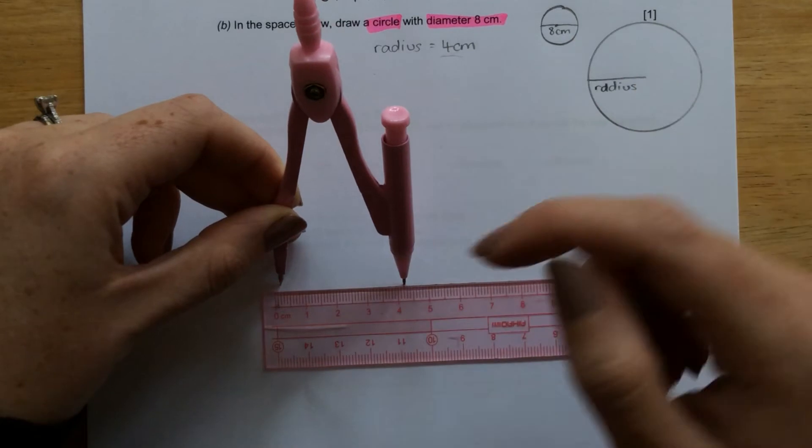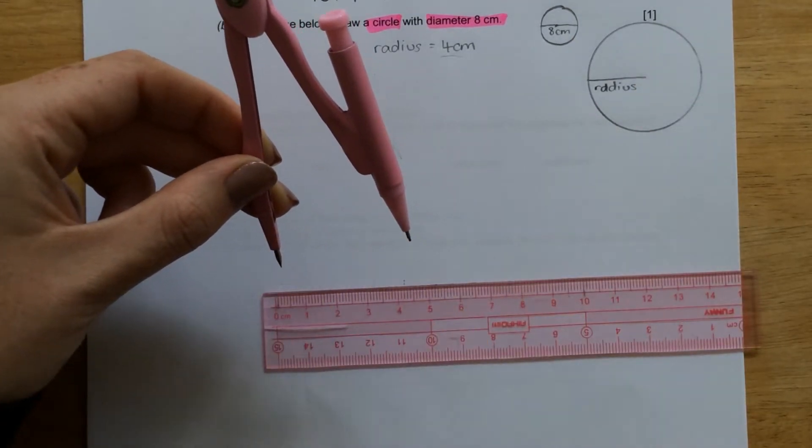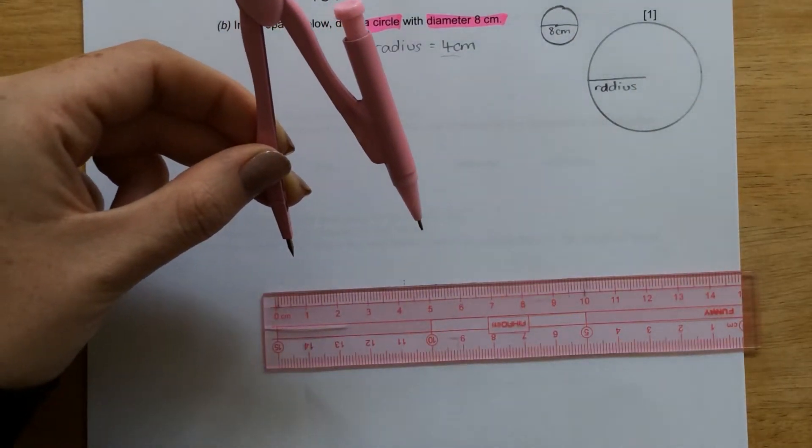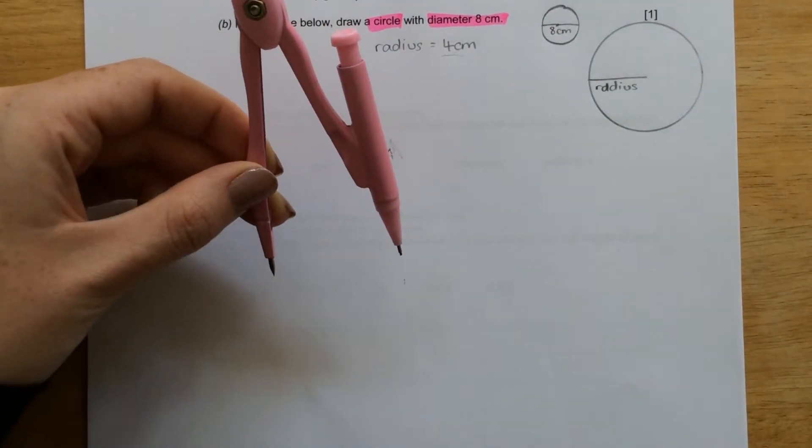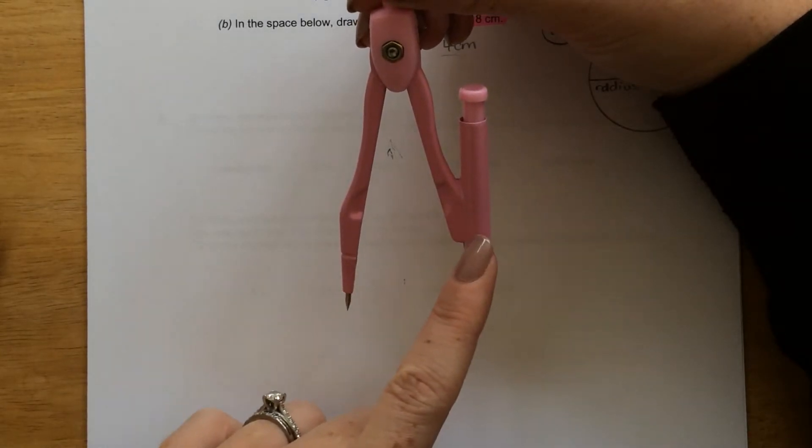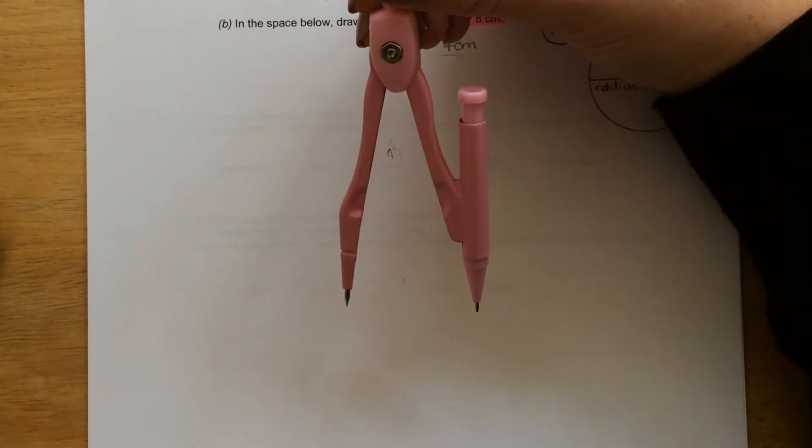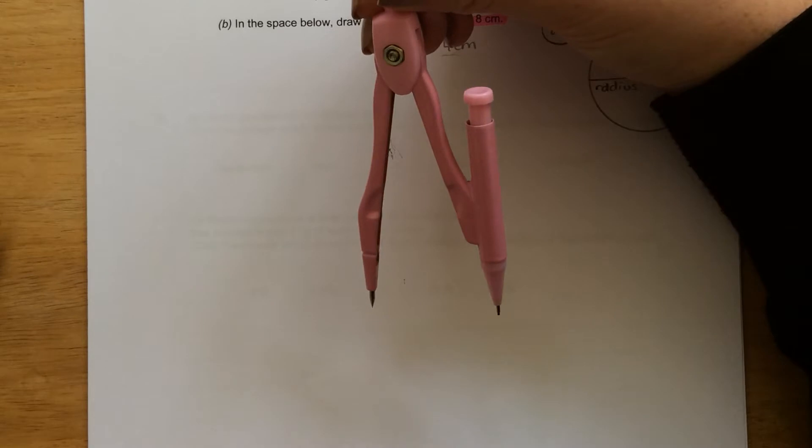So now I have a distance from here to here, which will be the radius of my circle, at 4 centimetres. Now I've measured that, I'm not going to touch the pencil so that it moves, because that means my accuracy would be off. It would no longer be 4 centimetres.